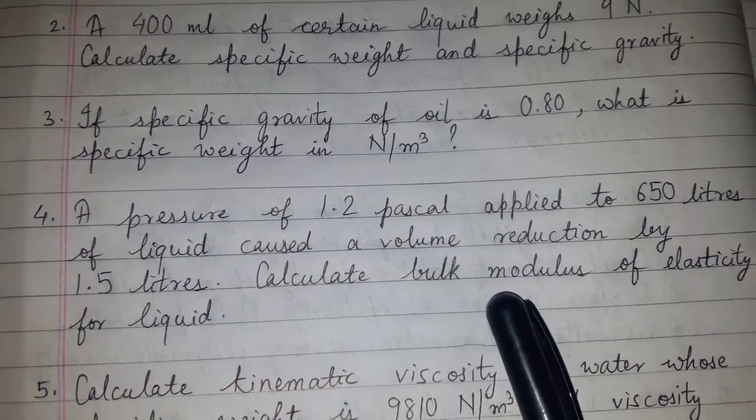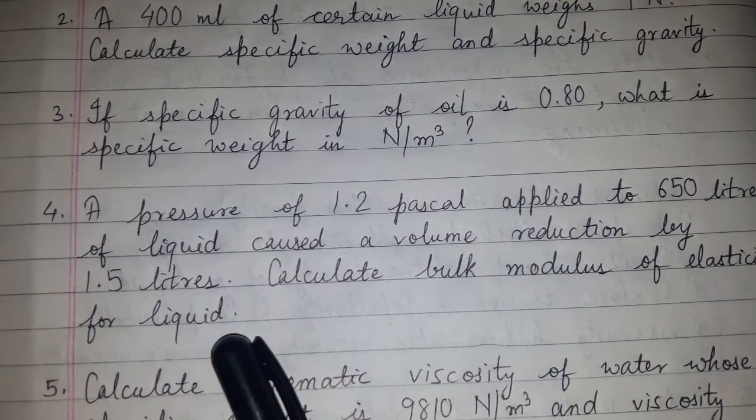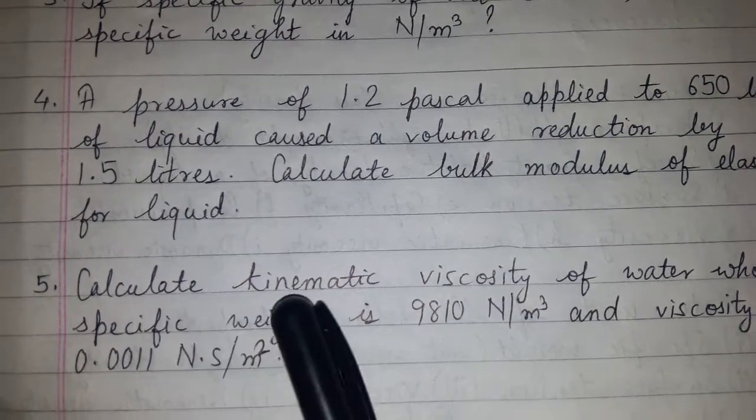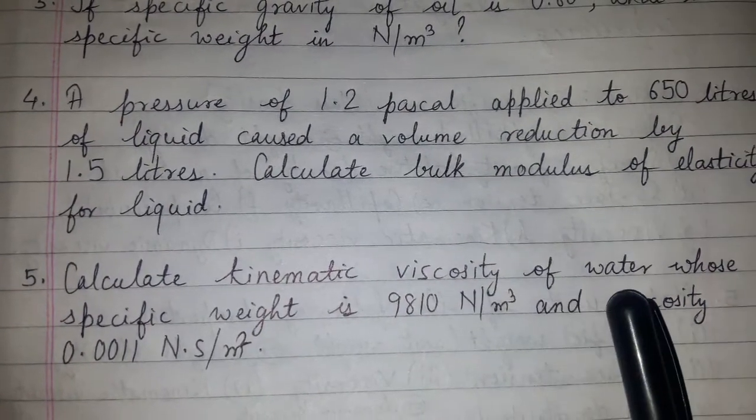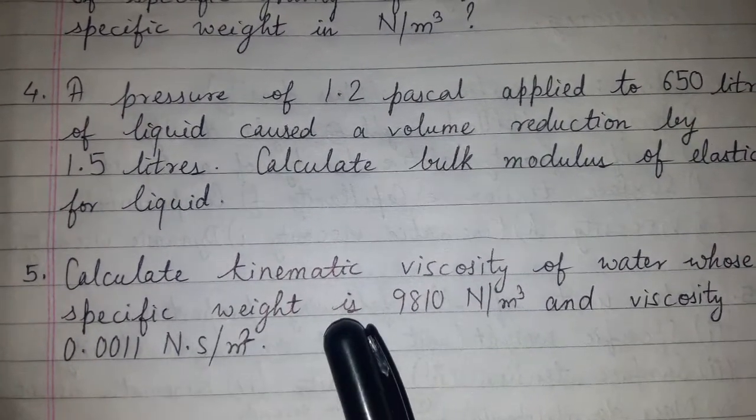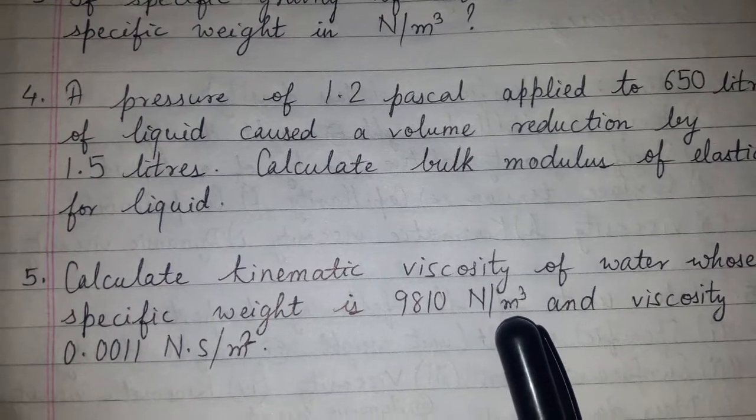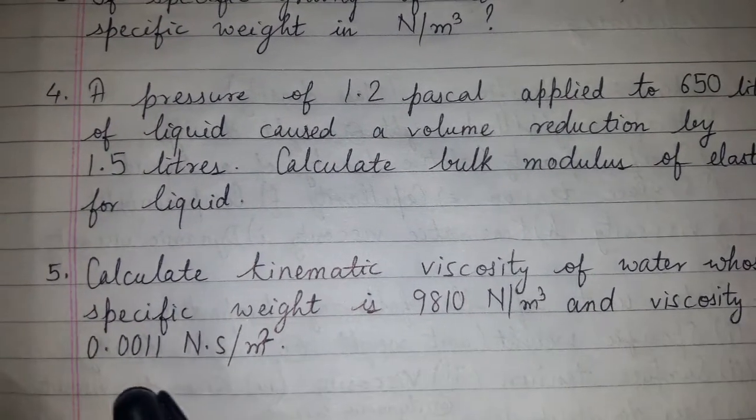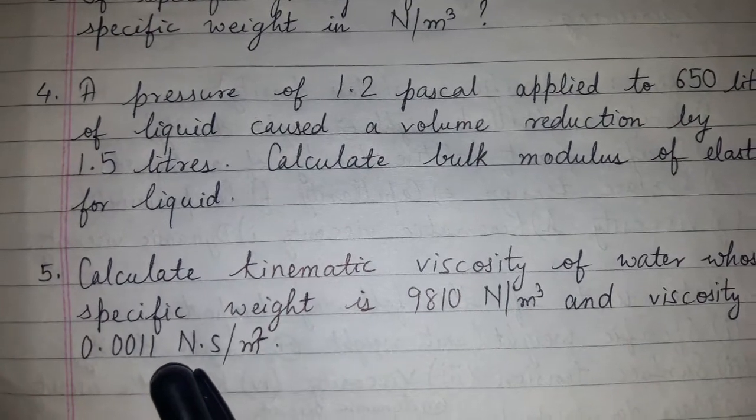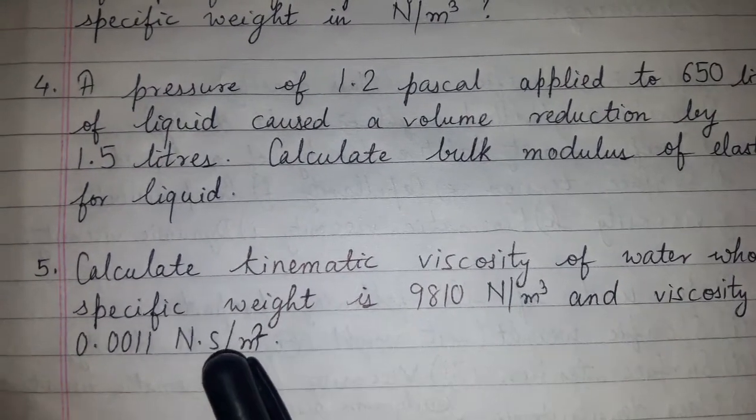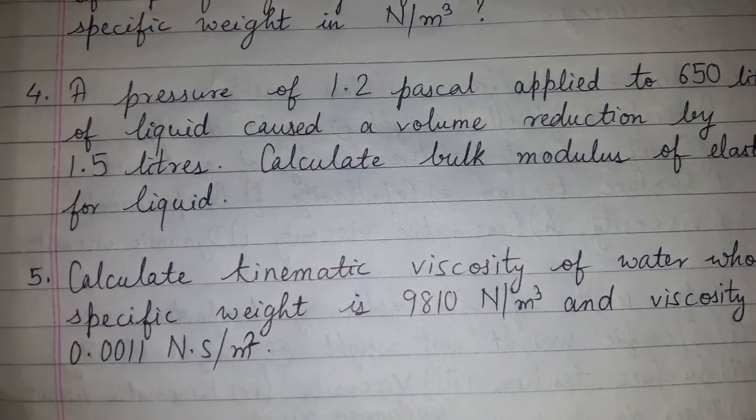Calculate kinematic viscosity of water whose specific weight is 9810 N per m³ and viscosity 0.0011 Ns per m².